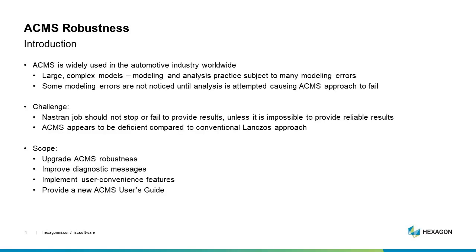ACMS is very widely used, especially in the auto industry, with large complicated models — 20, 30, 40 million degrees of freedom is typical. Large frequency ranges for frequency response, etc. The way these models are assembled by various different groups can lead to modeling mistakes. Some of them are significant and some are not. Modeling errors are not caught by the user until they're actually running Nastran and some small part of the model is not properly constrained — it's moving somehow. That's where we have to help the user understand what's happening.